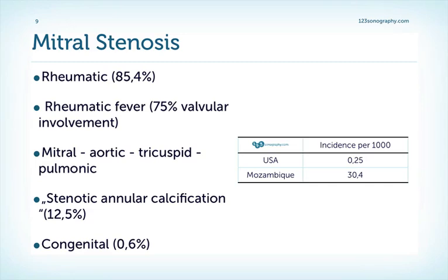Mitral stenosis almost always is caused by rheumatic heart disease. Rheumatic fever involves the heart valves in two-thirds of cases, and since rheumatic fever varies very much from country to country and continent to continent, we have a large variation in the incidence of mitral stenosis. Since rheumatic fever is less and less common in the Western world due to antibiotics, we don't see it frequently in the US or Western Europe, but it's still fairly prevalent in countries like Mozambique or India.